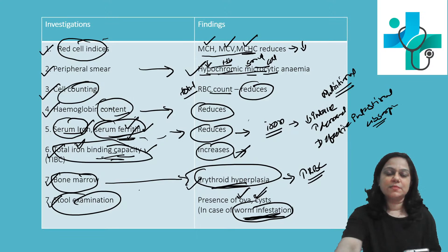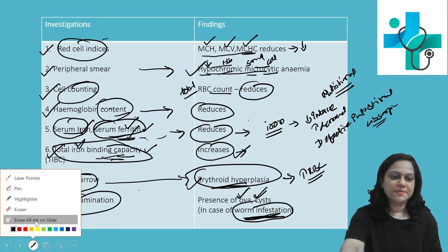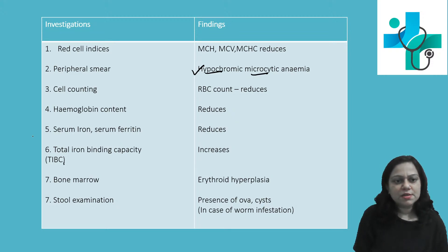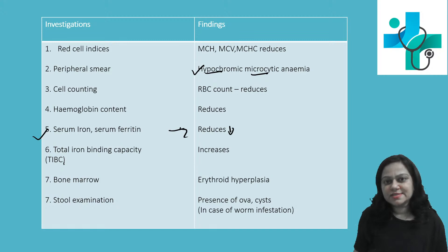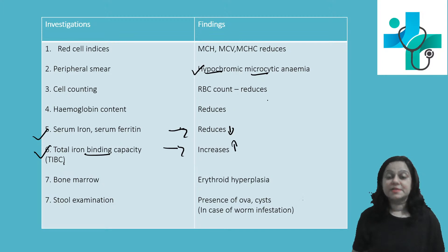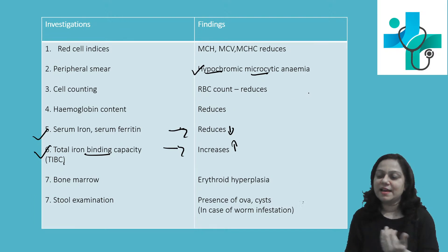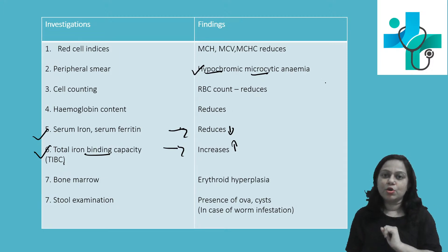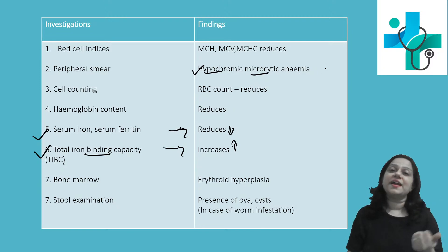Here are some important key points from an MCQ point of view. Hypochromic microcytic anemia — serum iron and serum ferritin level reduces in iron deficiency anemia. Total iron binding capacity increases. In contrast, try to recall that megaloblastic anemia — because of the presence of megaloblasts, there is more RBC cell lysis, causing increased serum bilirubin level. But in iron deficiency anemia, bilirubin level is not affected.